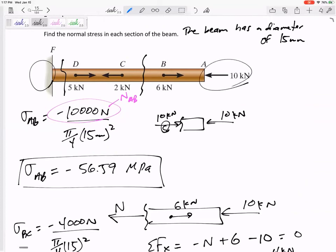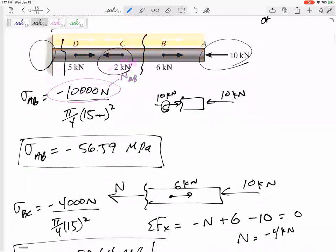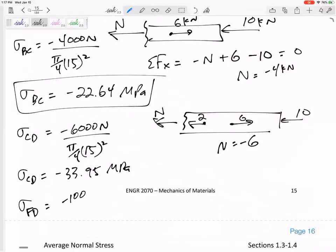If I have 10 this way and 2 that way, so I've got 12 that way. I've got 11 that way, so I need another 1 that way. 1,000 newtons in compression, pi by 4, 15 squared, 5.66 MPa. Stress inside section DF.